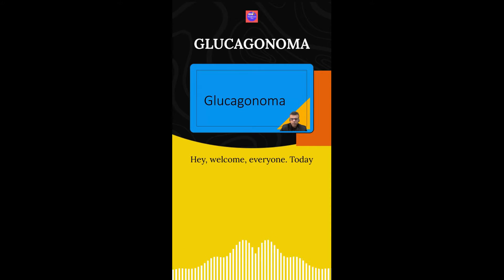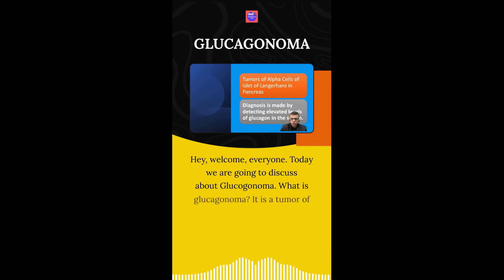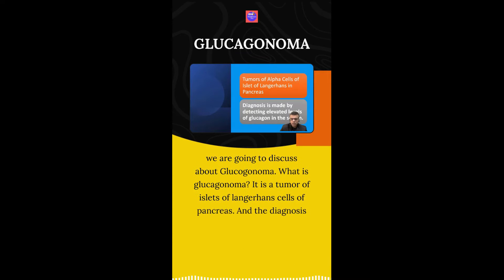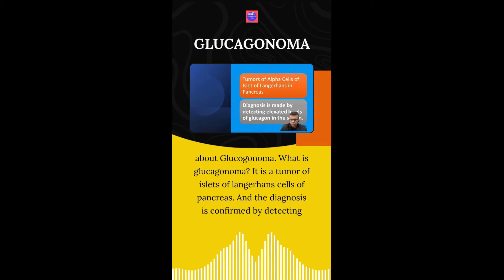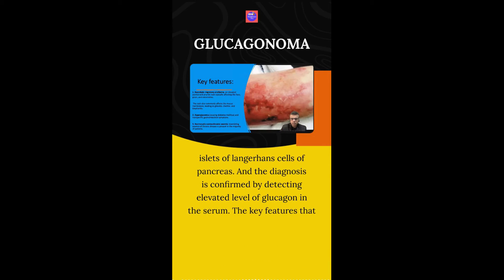Welcome everyone. Today we are going to discuss glucagonoma. What is glucagonoma? It is a tumor of the islet cells of Langerhans in the pancreas, and the diagnosis is conferred by detecting elevated levels of glucagon in the serum.